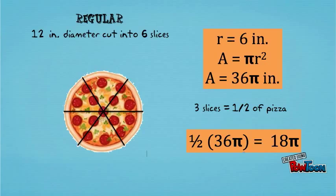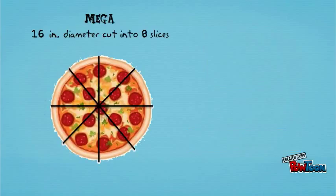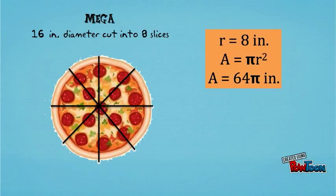Now let's move on to the mega pie. The diameter of the mega pie is 16 inches, which means that the radius is eight inches, which makes the total area of the pizza pi times eight squared or 64 pi. There are eight slices in the mega pie, which means that the area of each slice is one eighth of 64 pi.